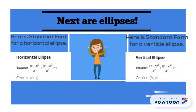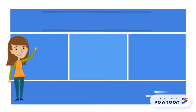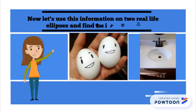Next, we have ellipses. Here on this slide, I have both the standard form for a horizontal ellipse and a vertical ellipse. Now let's use this information to find the equations of two real life ellipses.